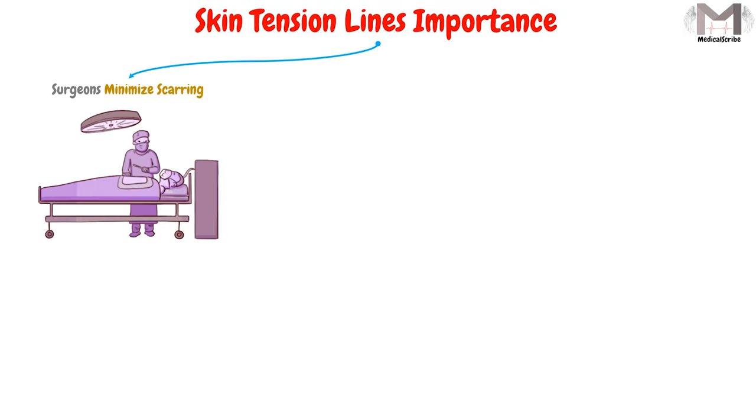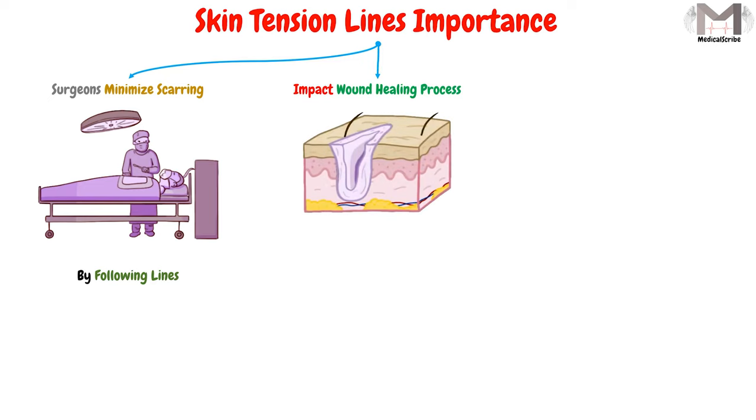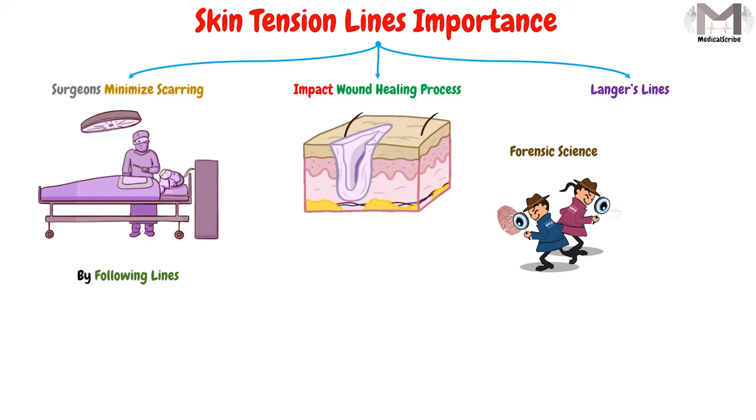Finally, in this video, we have to understand the importance of these lines. In fact, these lines have three main functions. The first one is that the surgeons attempt to minimize the scarring that is caused due to surgical incisions by following these lines. While the second function is that these lines may impact the wound healing process. And finally, the Langer's lines in particular will be relevant to the forensic science and will help in developing the surgical techniques.